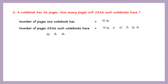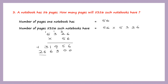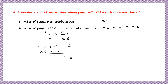Let's do that multiplication: 5,326 into 56. First step: 6 × 6 = 36 carry 3; 6 × 2 = 12 plus 3 = 15 carry 1; 6 × 3 = 18 plus 1 = 19 carry 1; 6 × 5 = 30 plus 1 = 31. Second step: 5 × 6 = 30 carry 3; 5 × 2 = 10 plus 3 = 13 carry 1; 5 × 3 = 15 plus 1 = 16 carry 1; 5 × 5 = 25 plus 1 = 26. Now add the two partial products: 6 plus 0 is 6, 5 plus 0 is 5, 9 plus 3 is 12 carry 1, 1 plus 2 plus 6 is 8, 3 plus 6 is 9, and then we have 2.